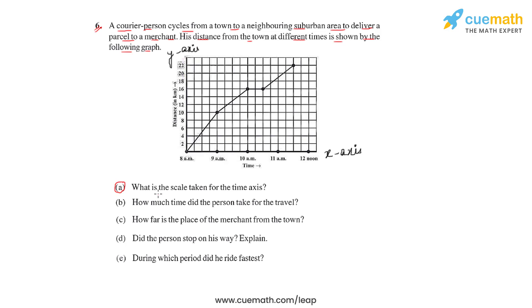In question (a) we'll have to find the scale taken for the time axis. Since the horizontal axis represents the time axis, this small square represents one unit. We have four units between an hour.